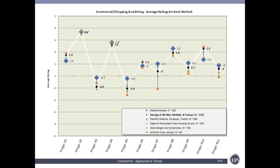The next slide shows a breakdown of images one through eleven, representing the six different subsets of data collection. Looking at image number two and image number four, there's an unbelievably high correlation among all respondents for these two images. Others have some variation, but this gives credibility to the overall methodology, showing high levels of correlation between the different outreach efforts.